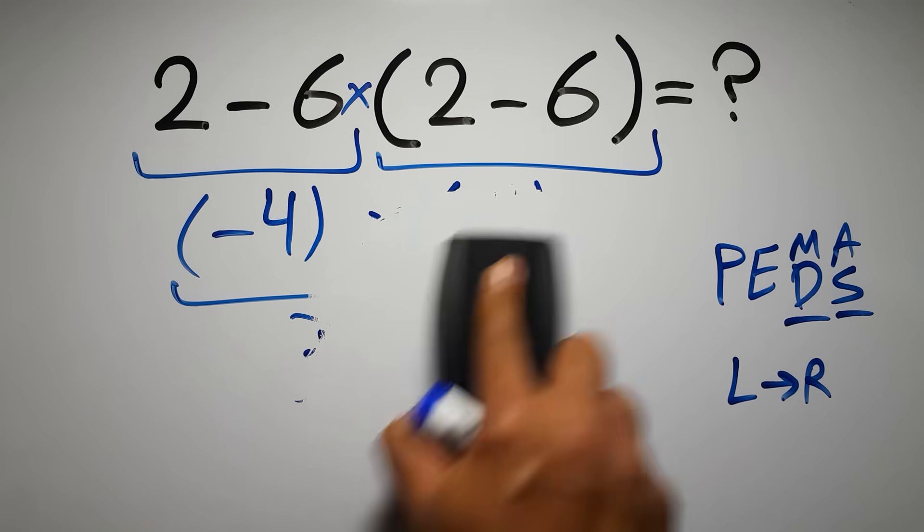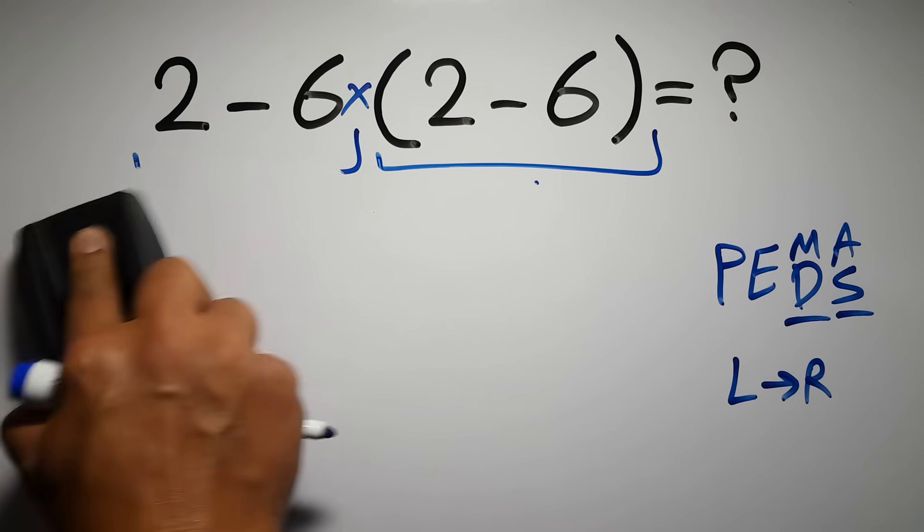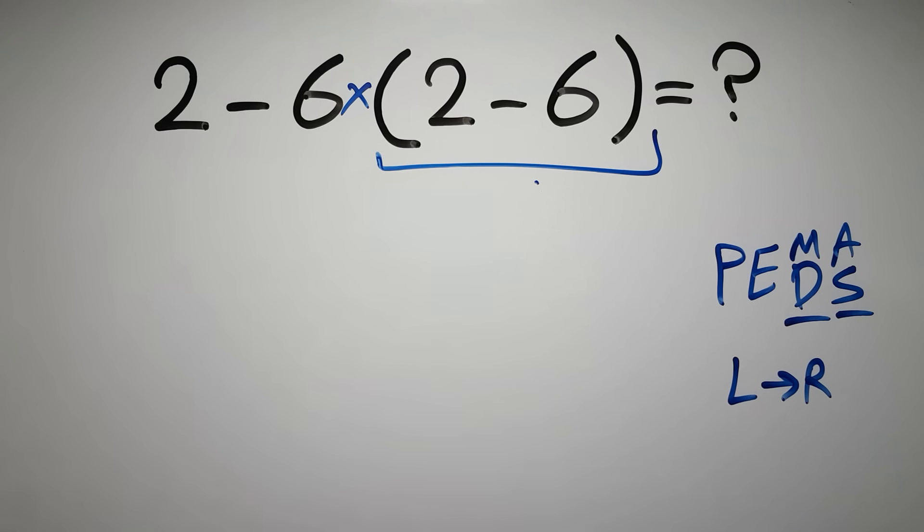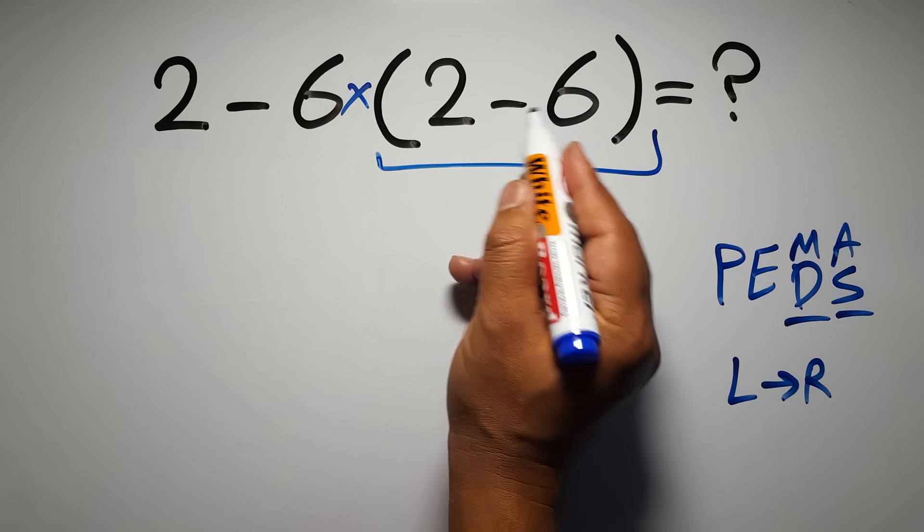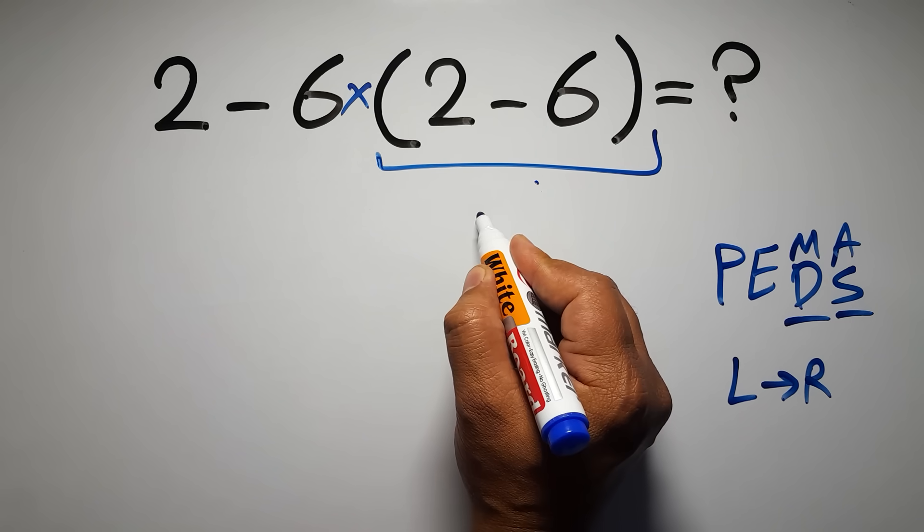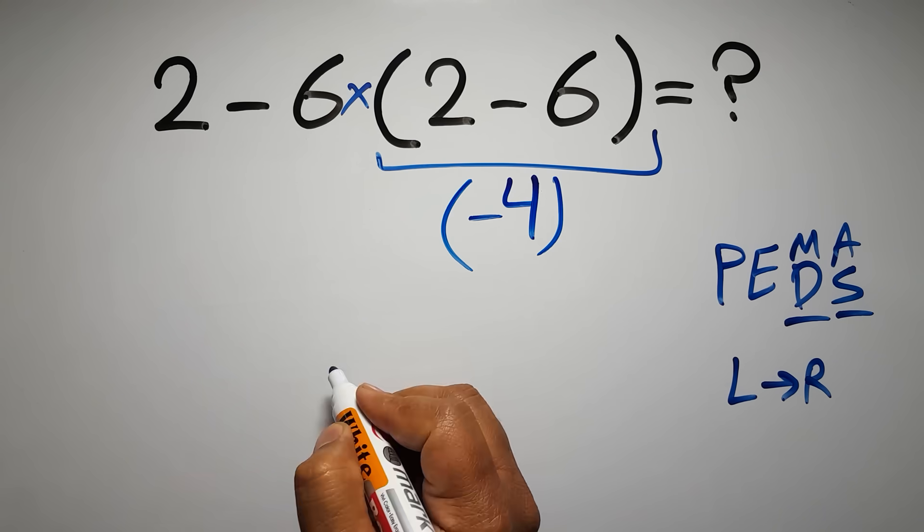So first this parentheses. Inside this parentheses we have 2 minus 6, which equals negative 4.